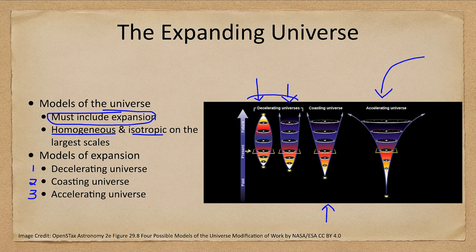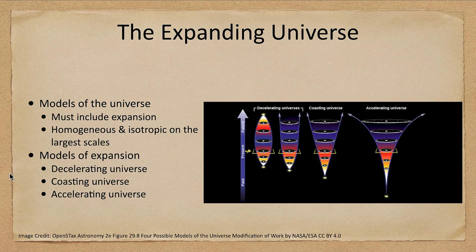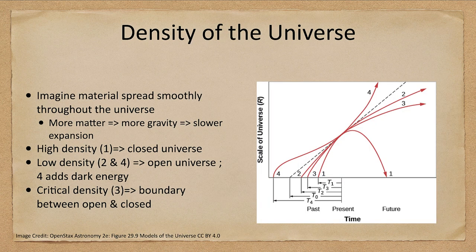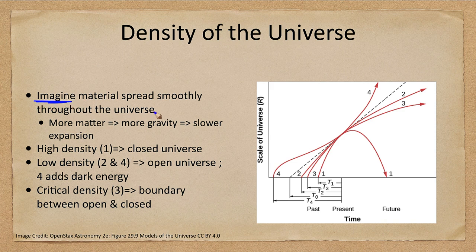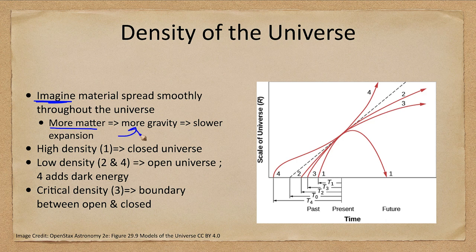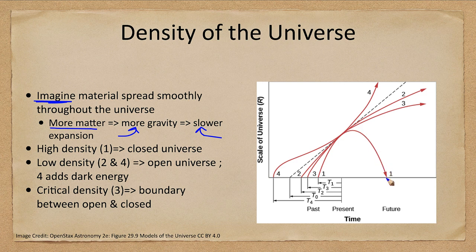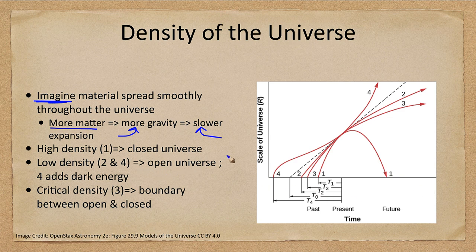Now this tells us something about how much material is in the universe, and we call this the density of the universe. In order to determine the density, we imagine that the material is spread uniformly throughout the universe. More matter means more gravity, which means a slower expansion rate. So if you have a very high density, then you have a completely closed universe where it goes out, expands to a certain size, comes back down and collapses again. And maybe that's a cyclical thing and will continue over and over again.